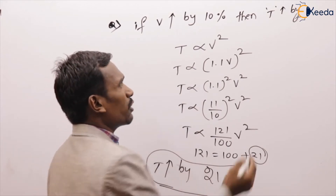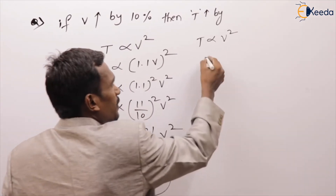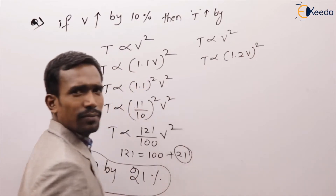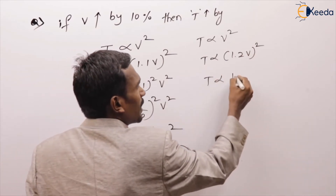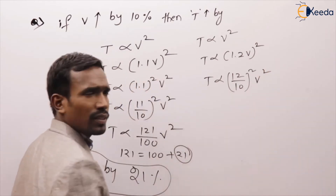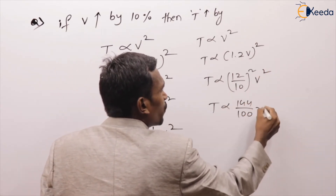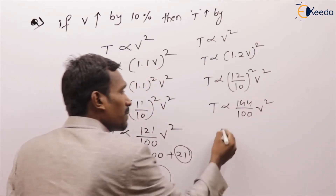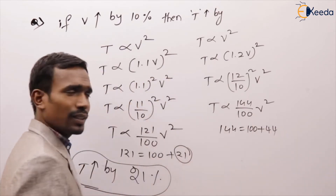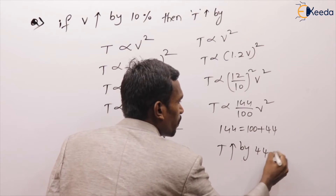For the same question — if voltage increased by 20%, then voltage becomes 1.2 × V, which is 12/10 squared, giving 144/100 into V squared. That is 100 plus 44, so torque increased by 44%.